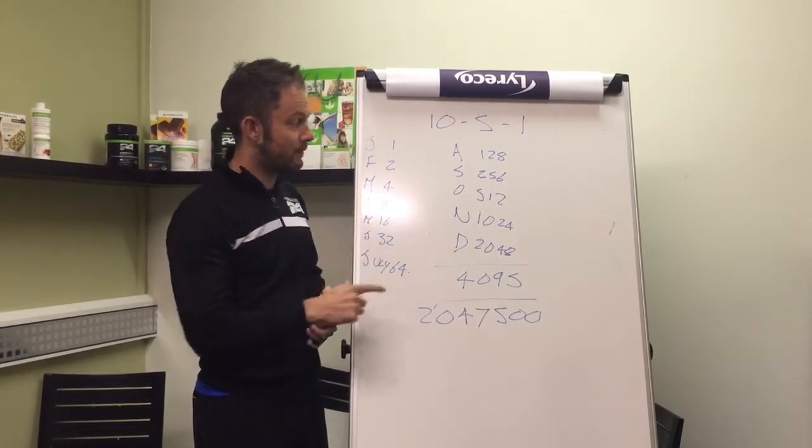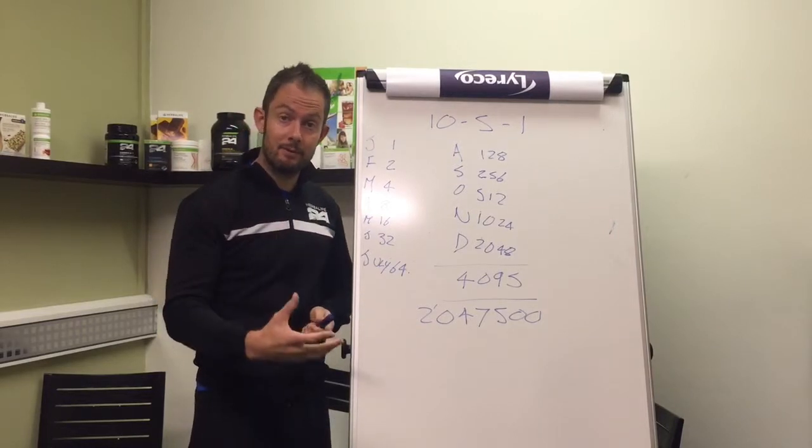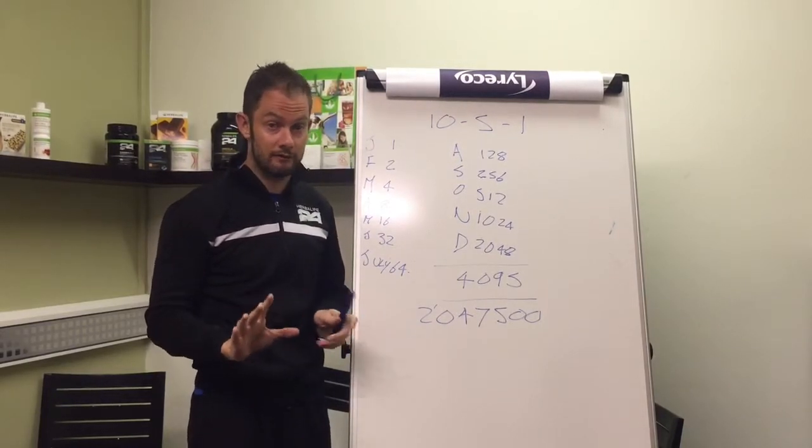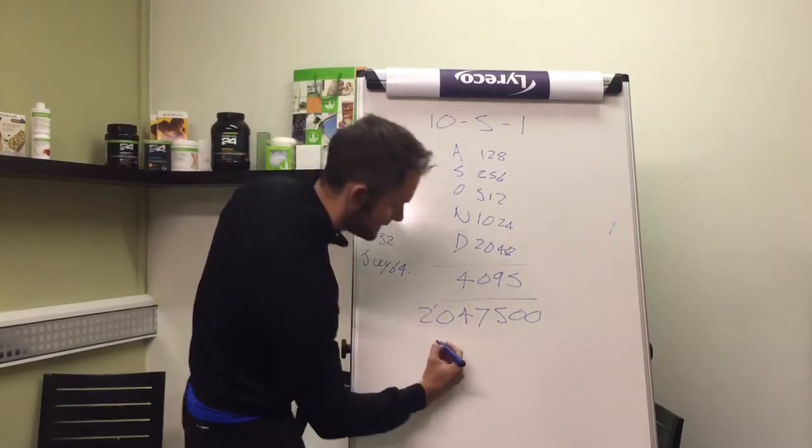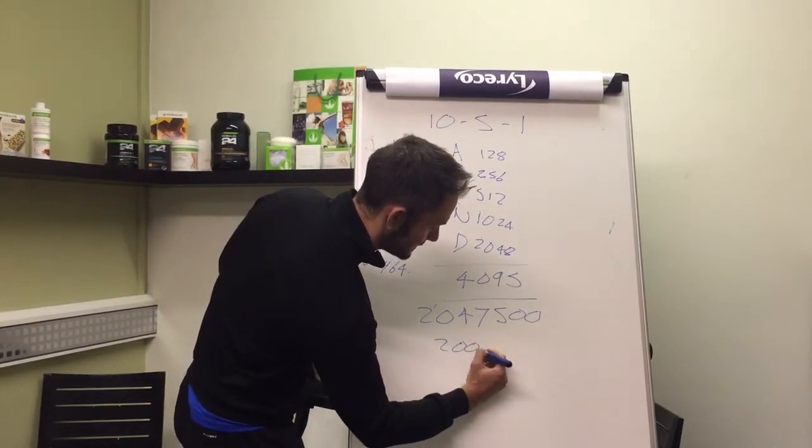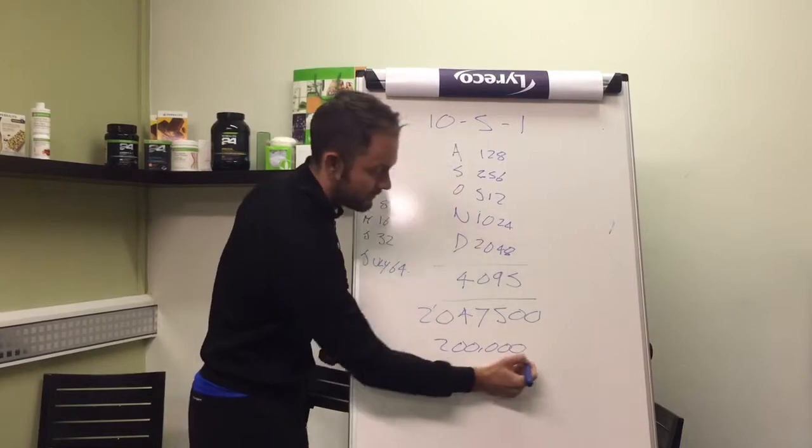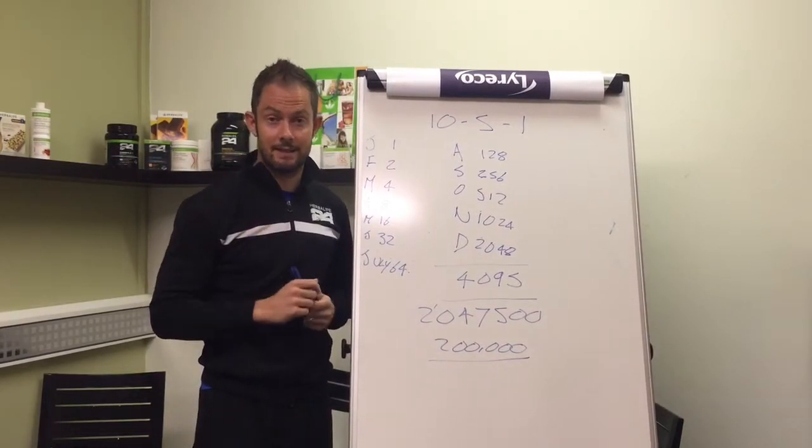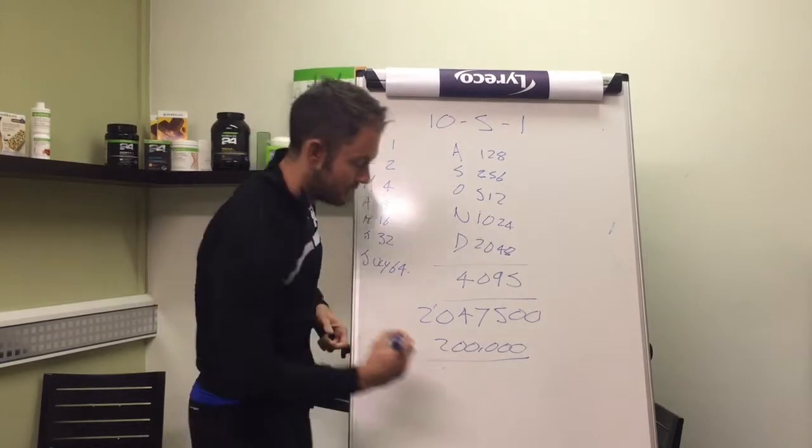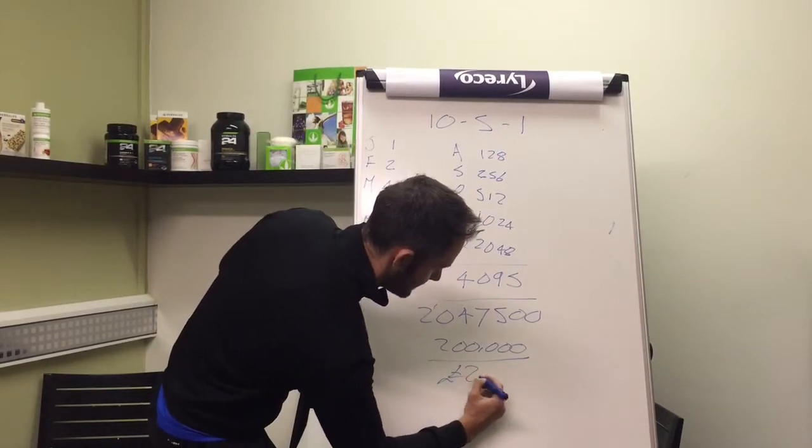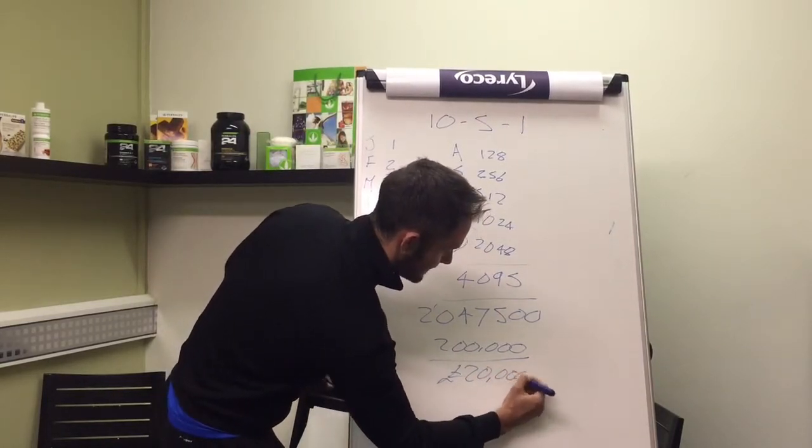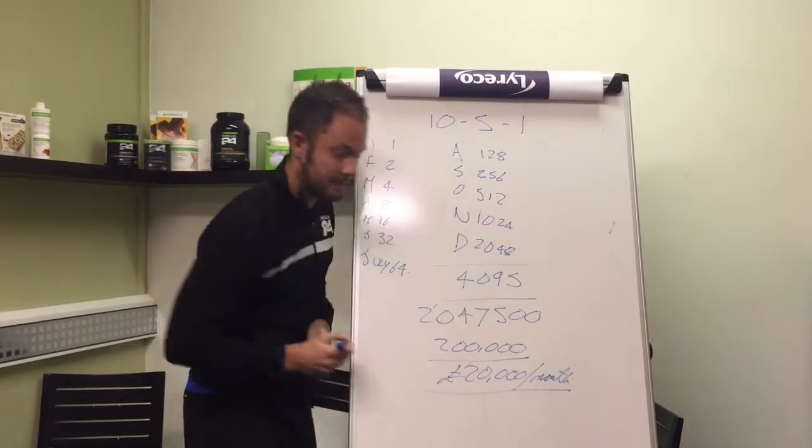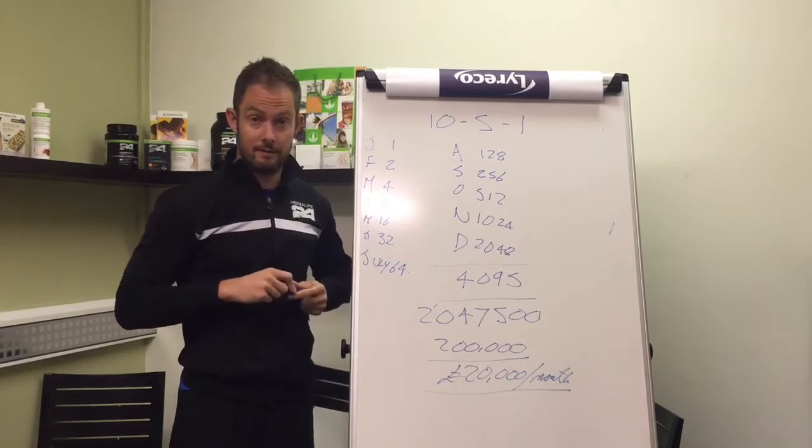So one tenth of these people follow the system, really kept going with the business model and kept doing just 500 volume points, that would stick you at about 200,000 volume points, which is equivalent to what you call a president's team business within Herbalife, which is going to earn you a reasonably respectable 20,000 pounds per month.